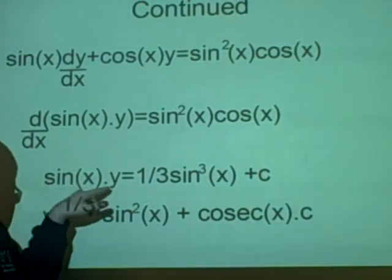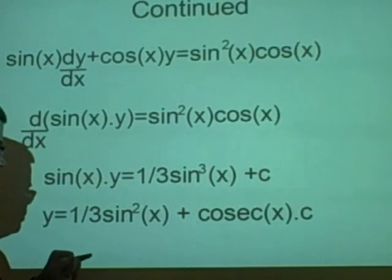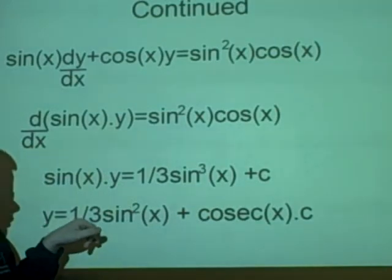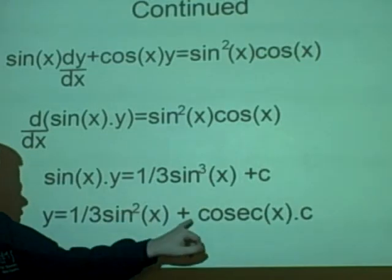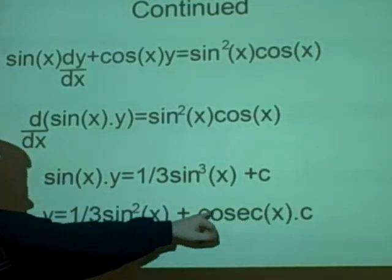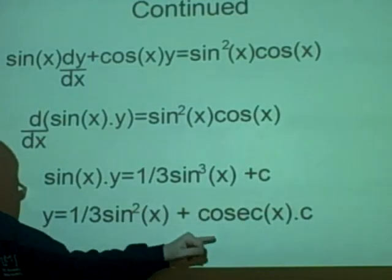Now what we want to do is we want to remove this sin(x) out of the way. So we get y on its own as the final answer. So y is a third sin squared x plus cosec(x) times c. And cosec(x) is just 1 over sin.